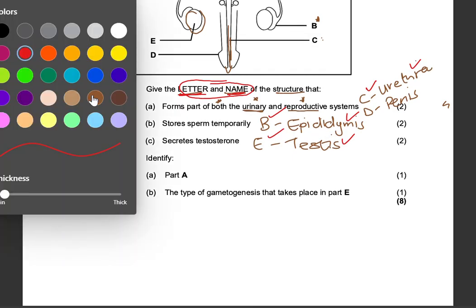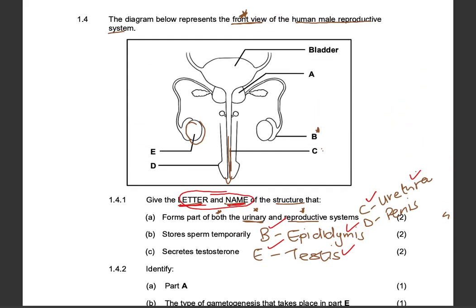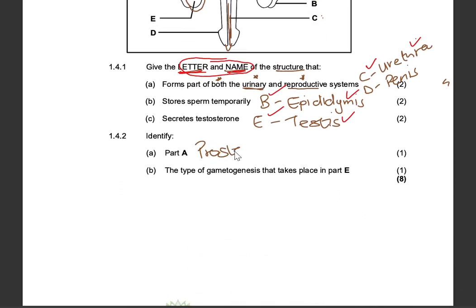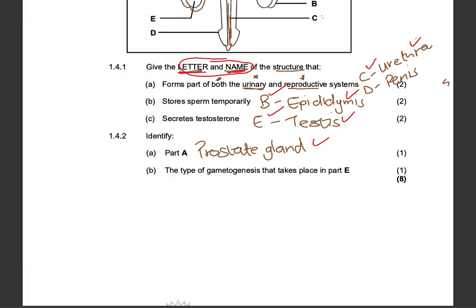Now for question 1.4.2 — identify part A. Let me scroll up. This looks like a gland. We know that there are three glands, and A is obviously the prostate gland. Simple.